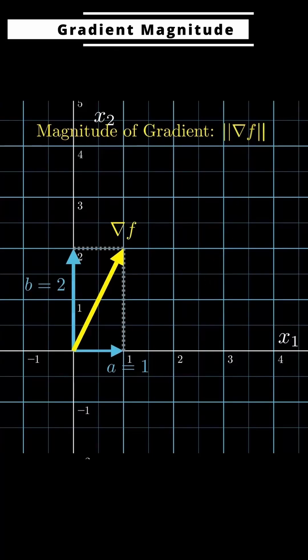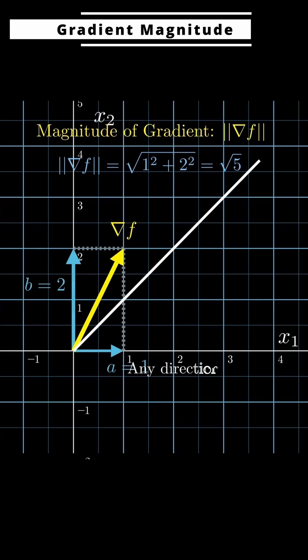Now, what about the size of the gradient? Does it just mean how much the whole surface is tilted compared to the x1, x2 plane? Not quite.